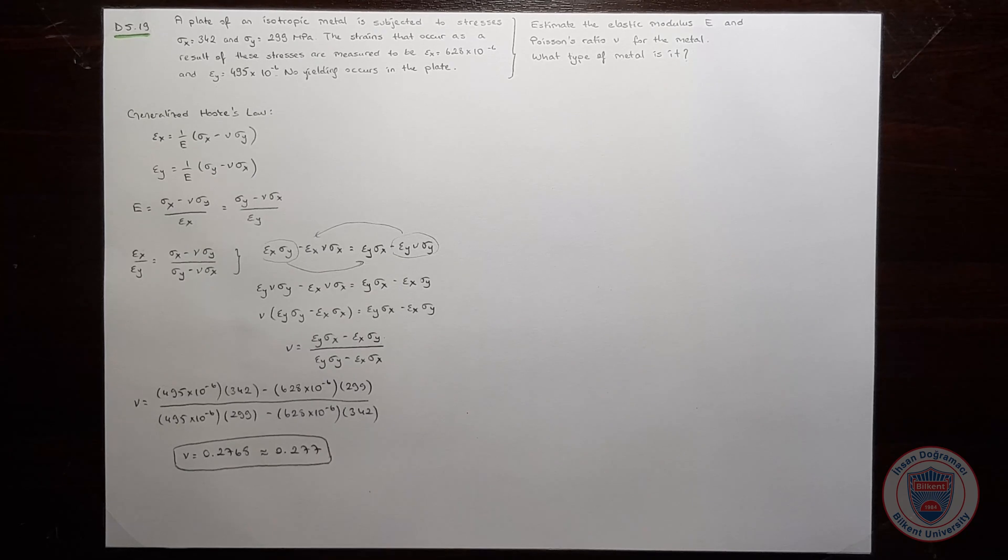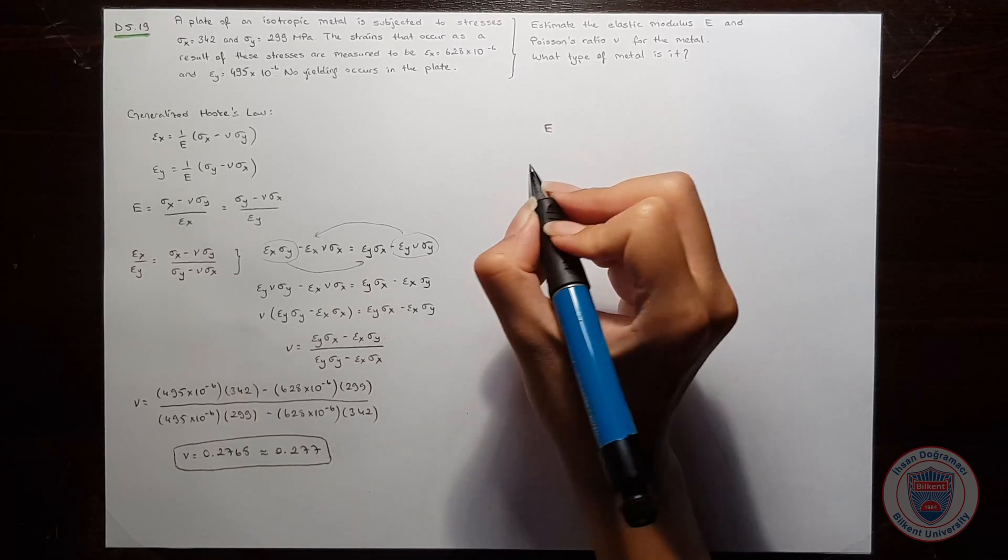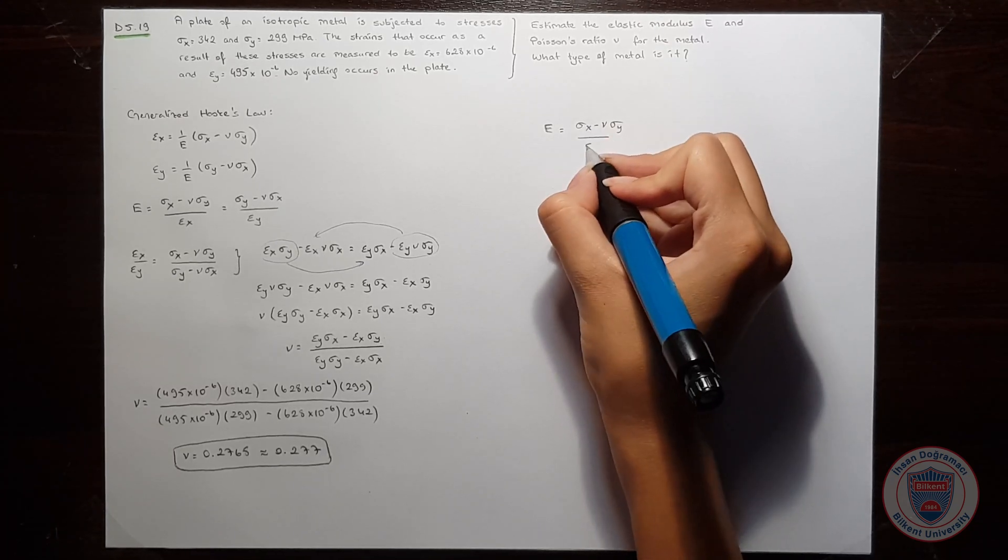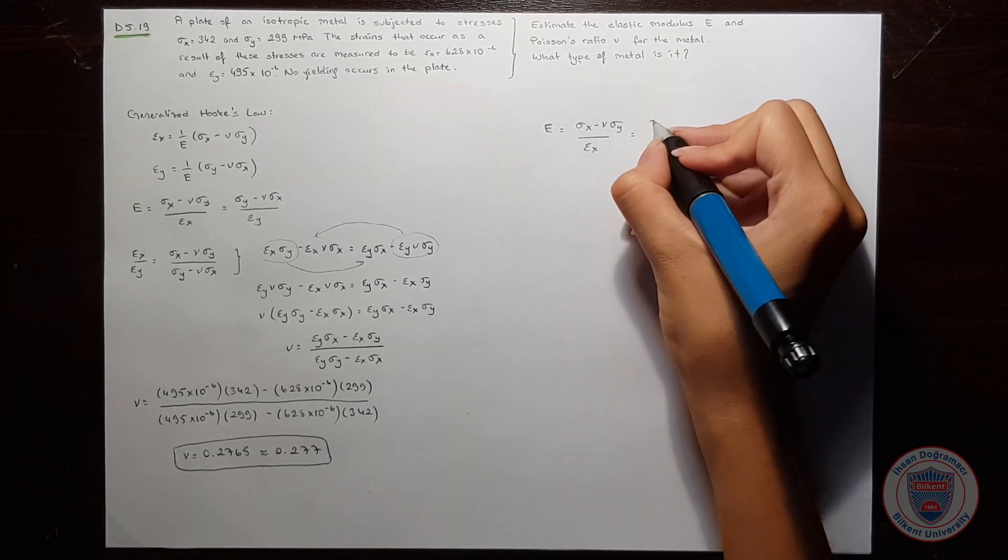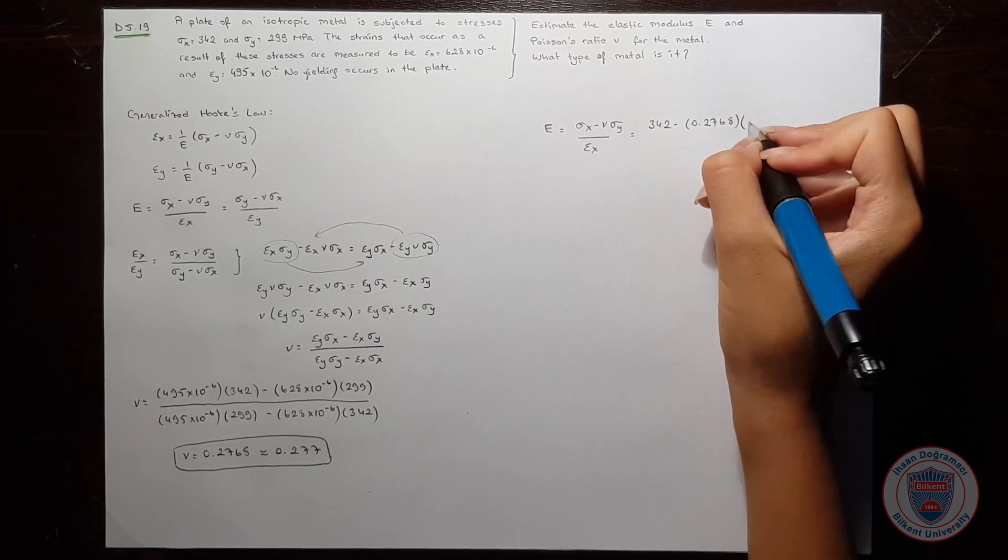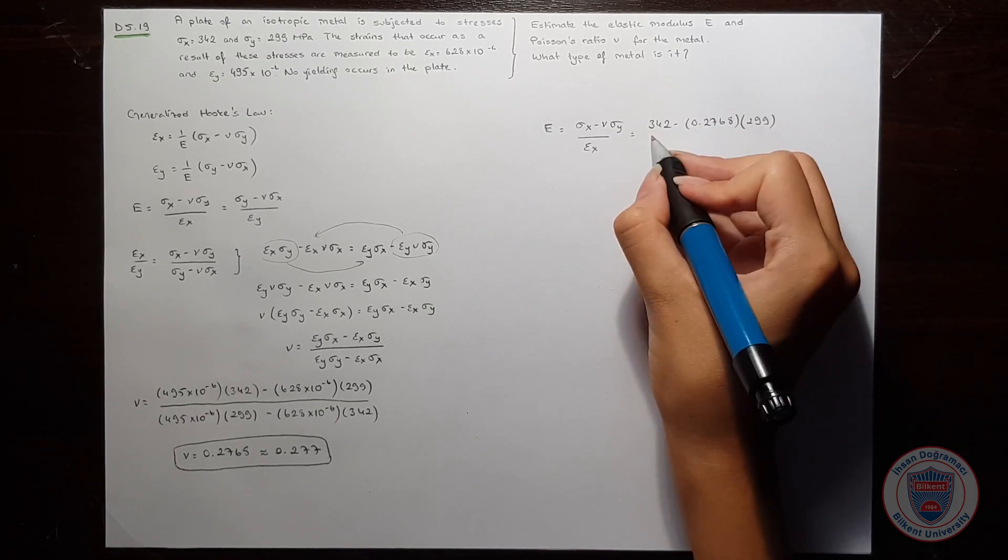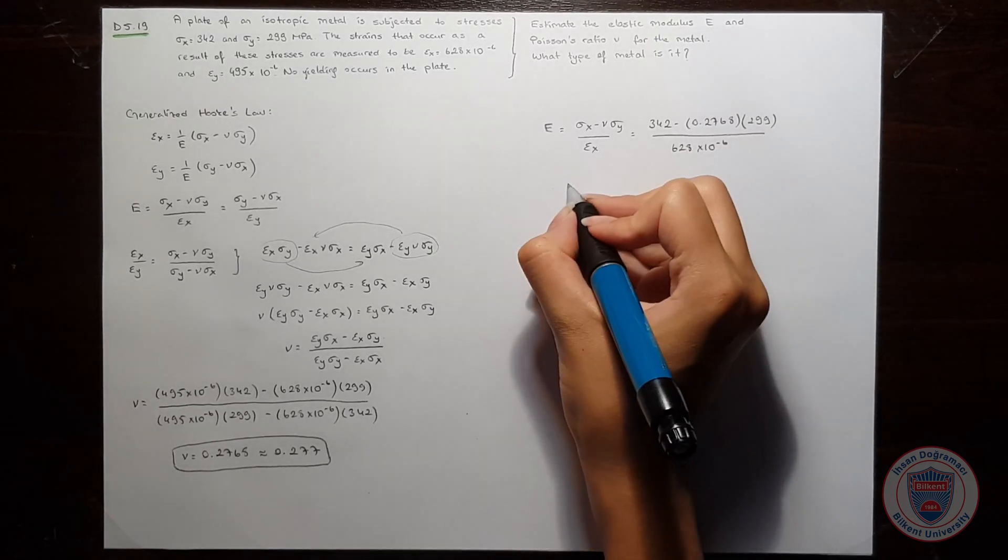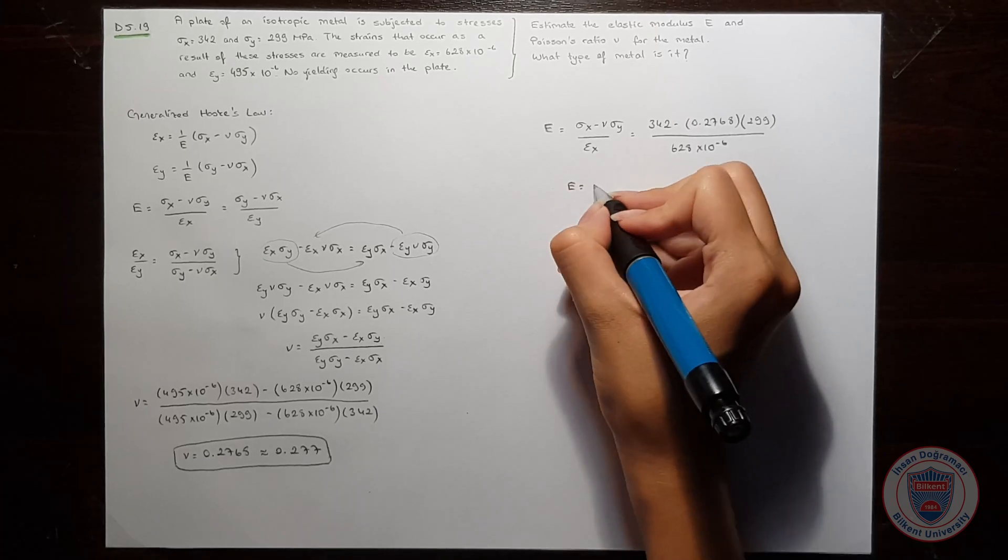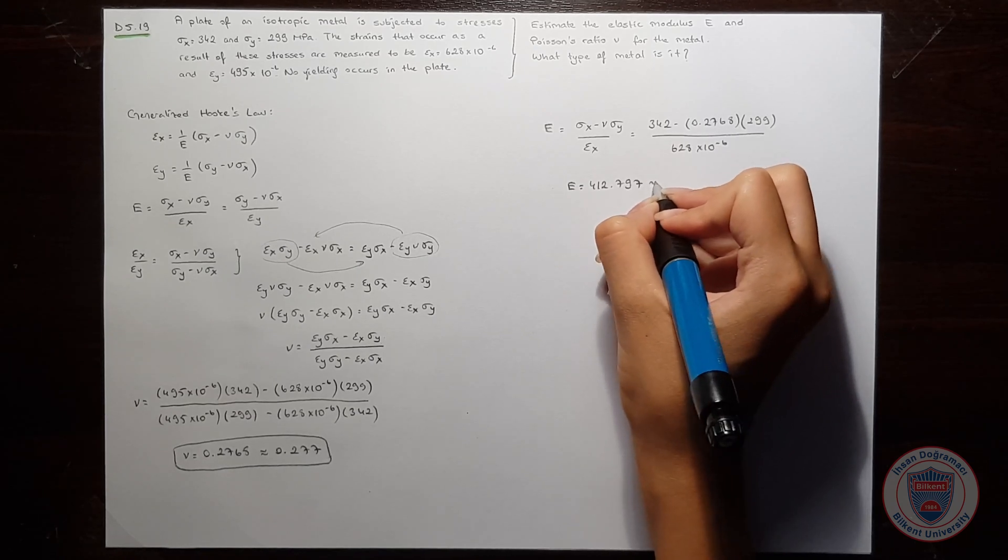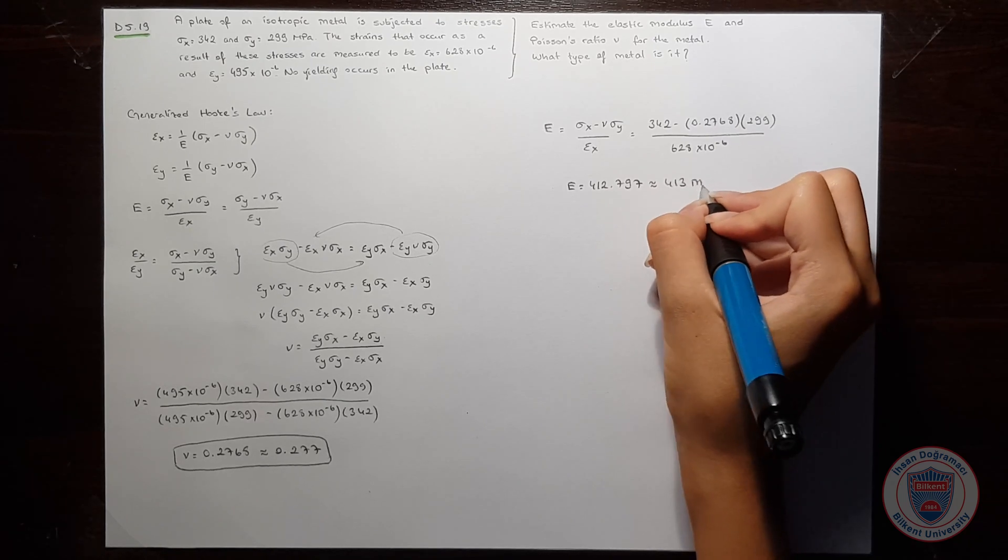Since we found the value for Poisson's ratio, we can now calculate Young's modulus. Let's calculate it. Substituting our values, Young's modulus is approximately 413 GPa.